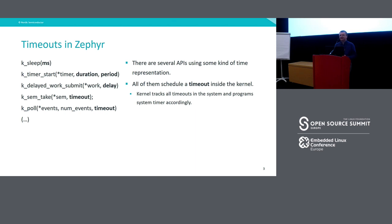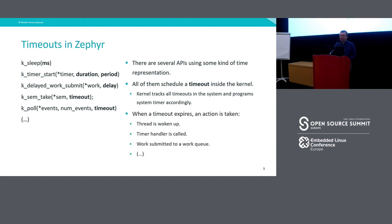The kernel itself tracks all individual timeouts and programs the system timer in order to get an interrupt when the given timeout is expiring. This interrupt allows you to handle something regardless of the state of the system — the system may be idle or executing something. But when the timeout expires, something happens: a thread can be woken up, some user-provided handler is called, work is submitted to a work queue, or anything else.